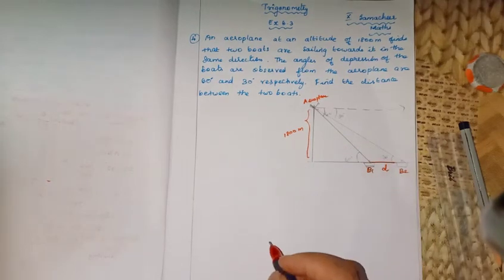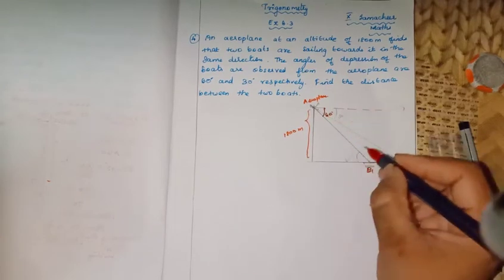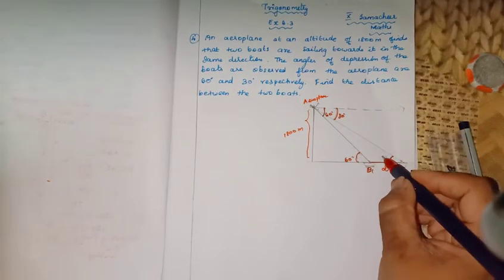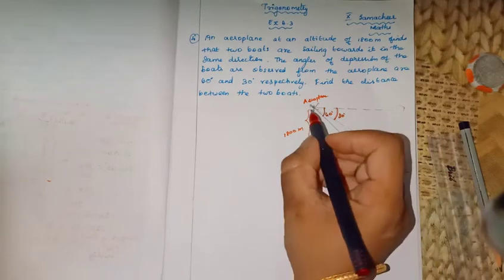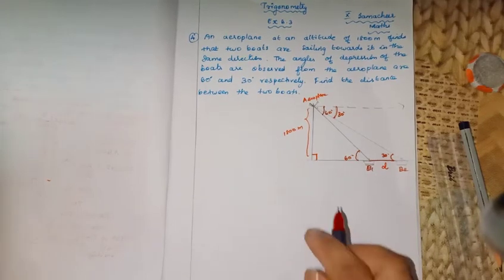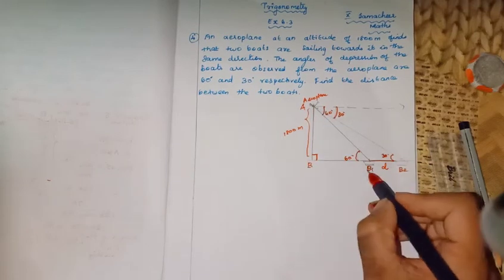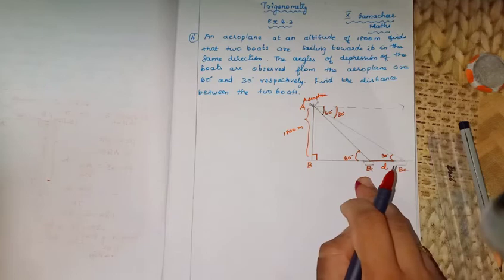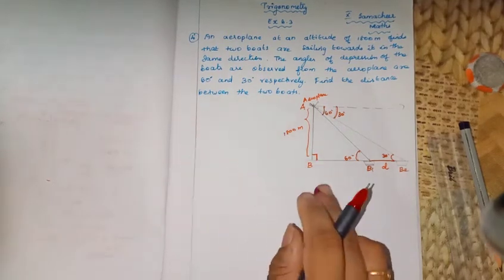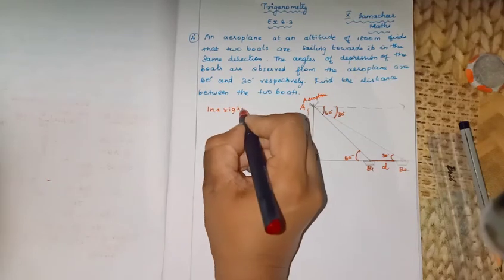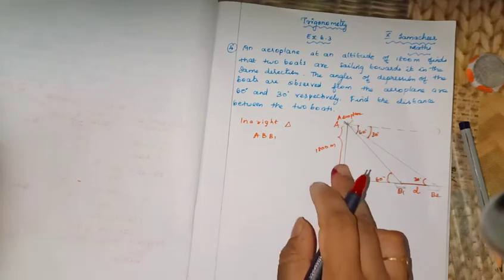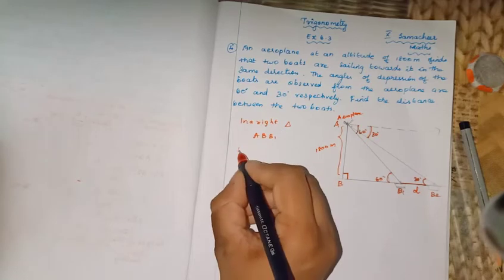I will mark the triangle names. This angle is 60 degrees — the reason is that alternate angles are equal because of parallel lines and a transversal. So we have two triangles: triangle ABB1 and triangle ABB2. In right triangle ABB1, AB is the altitude perpendicular to the ground.